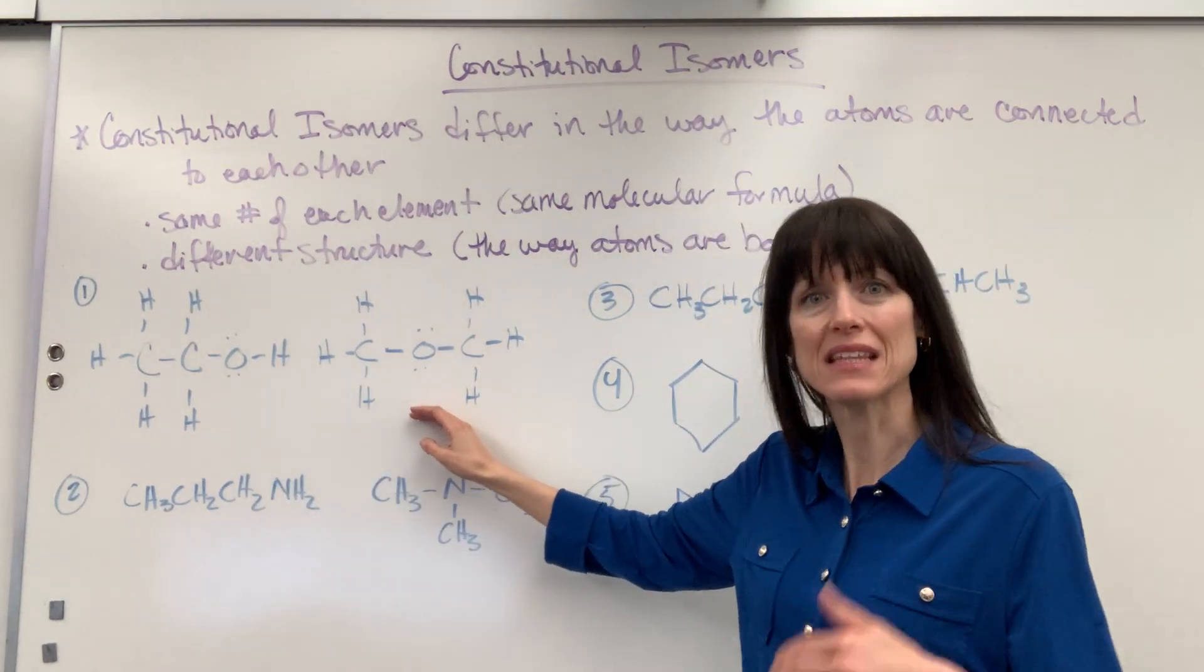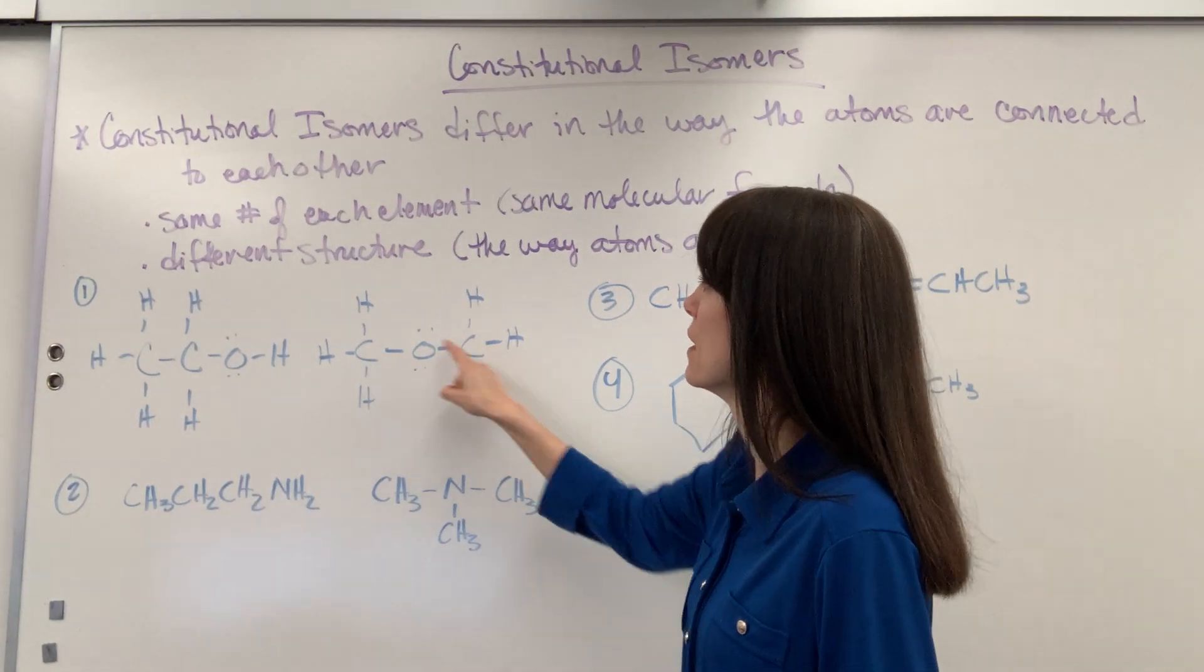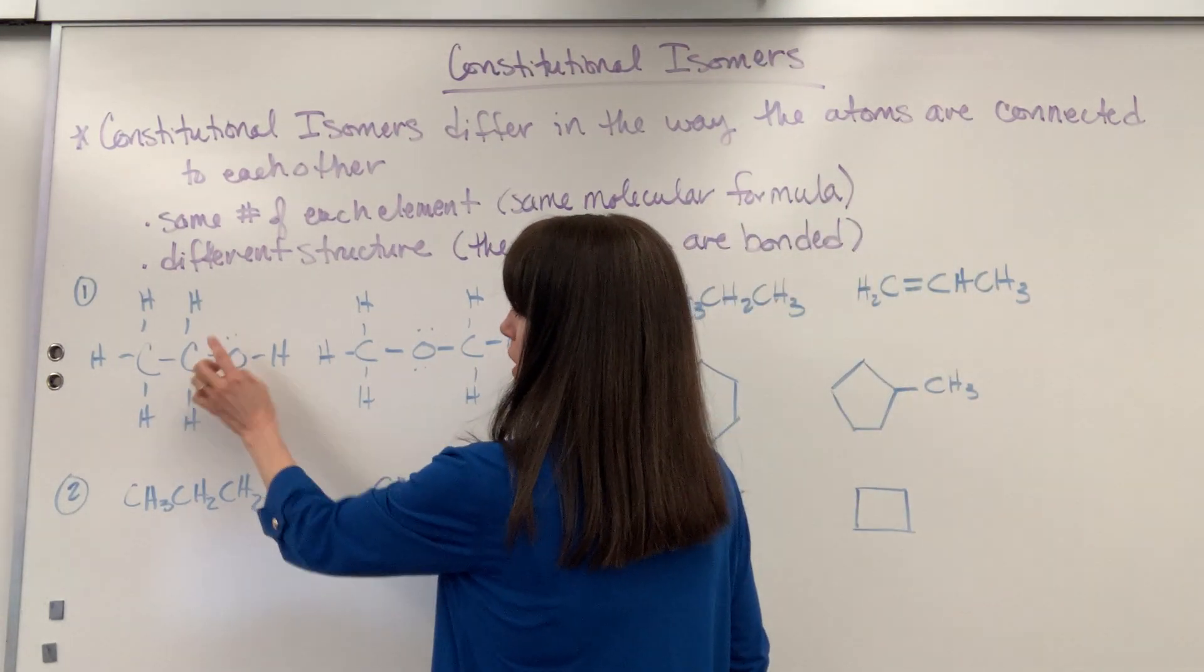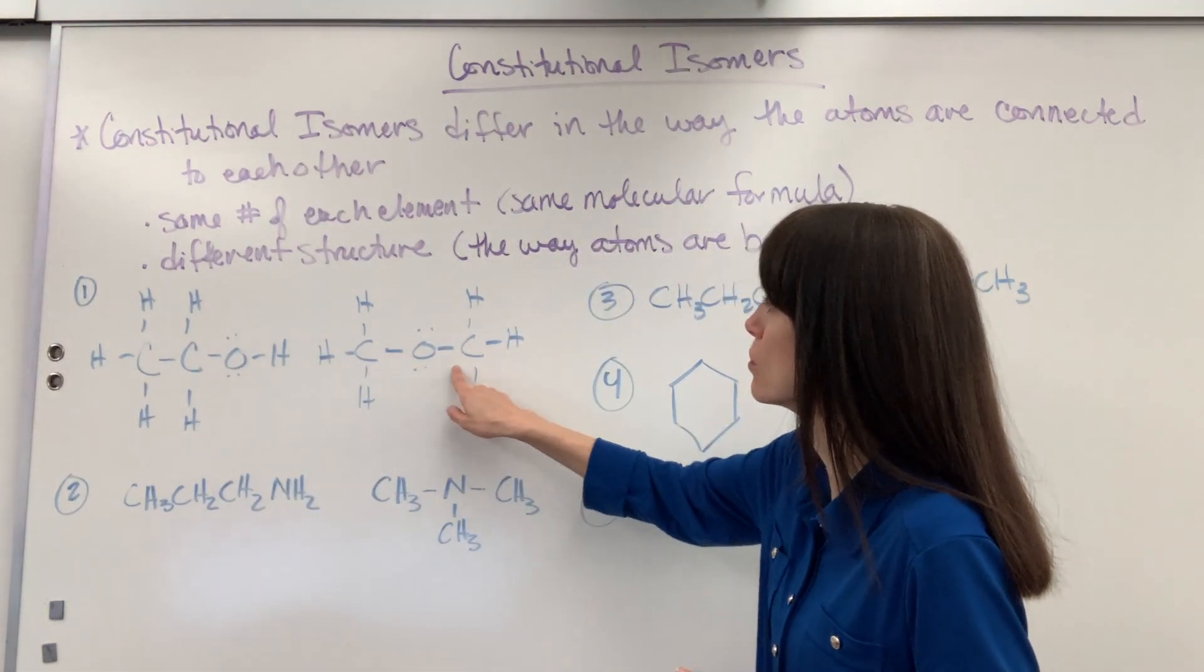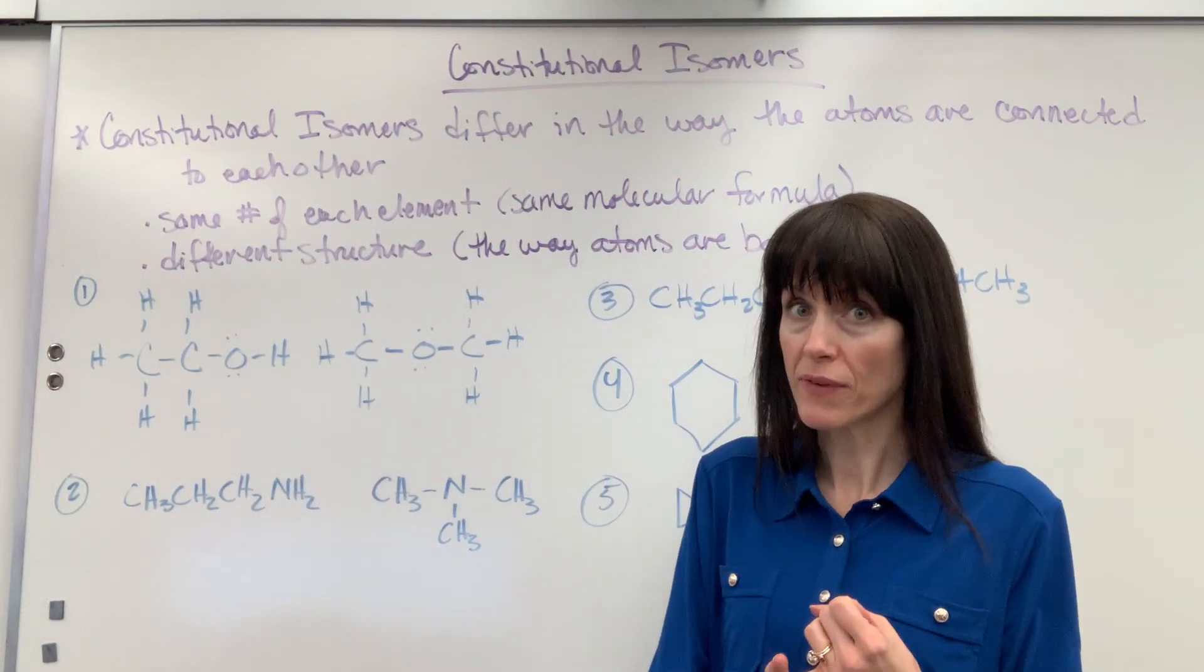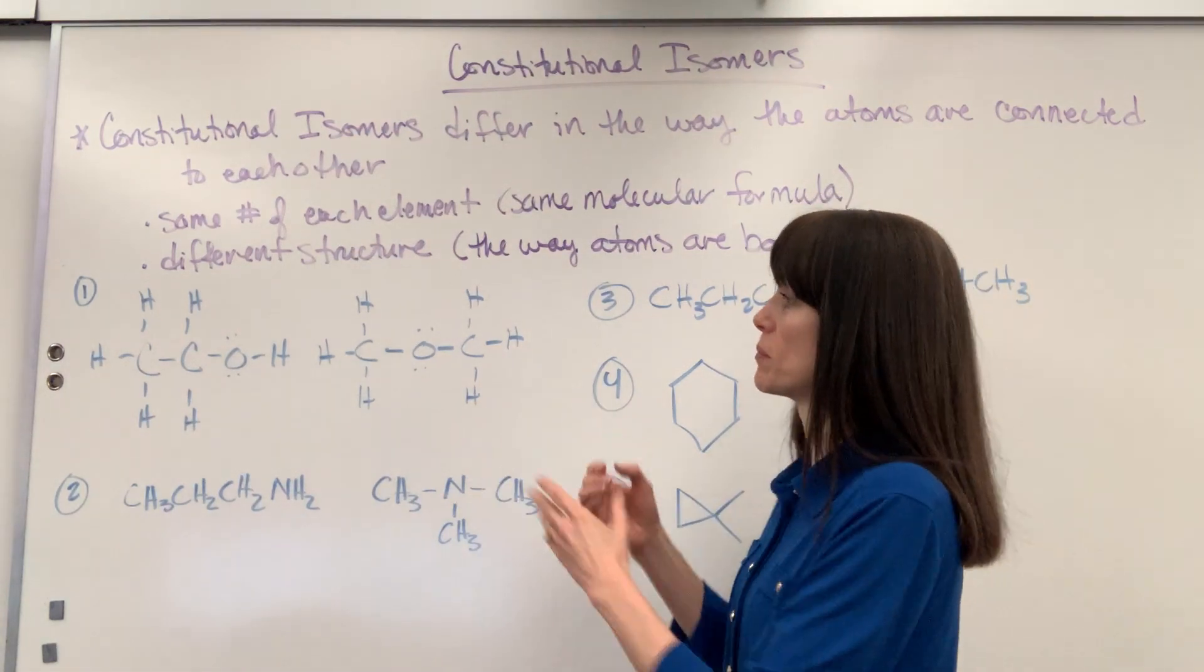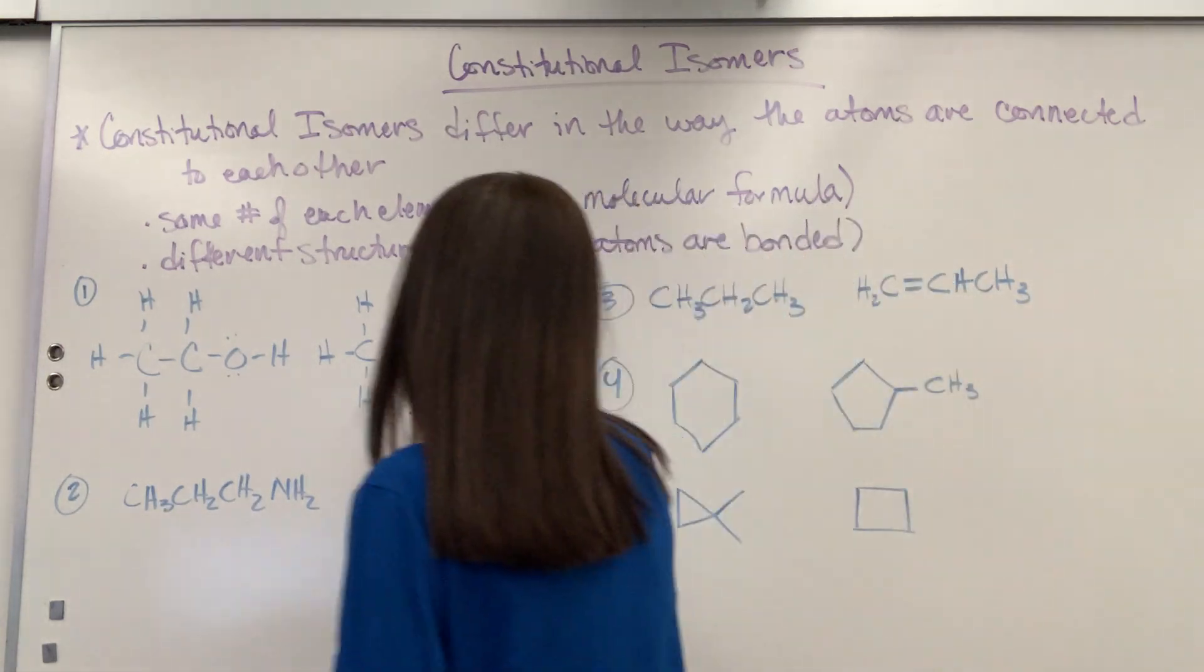Now over here it's an ether functional group. You have the oxygen in between the carbons and so here you would have a carbon oxygen bond, oxygen hydrogen bond, but in this one you have two carbon oxygen bonds. That makes that a constitutional isomer. Same number of elements but a different arrangement of bonds. The elements are bonded together differently. So that, let's write it down, is an isomer.